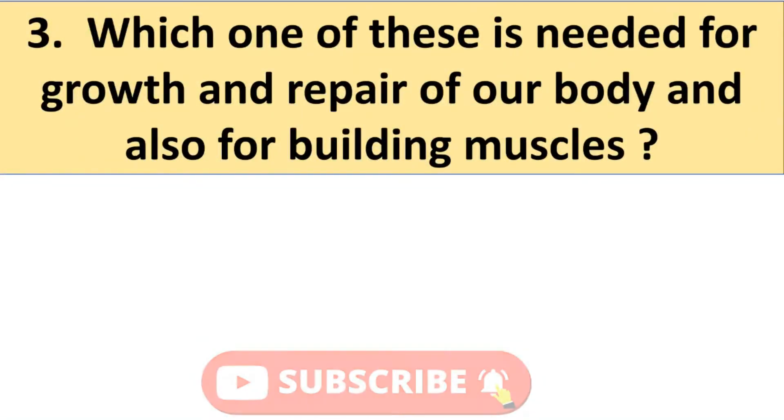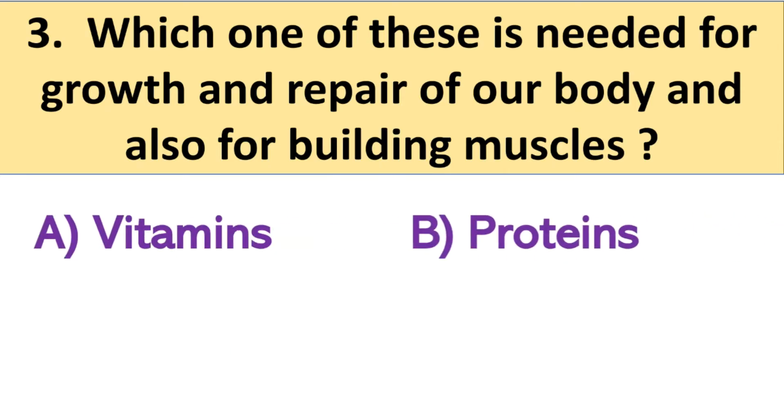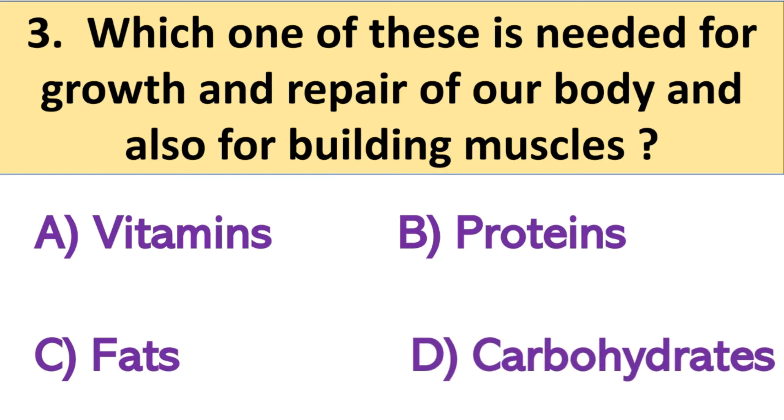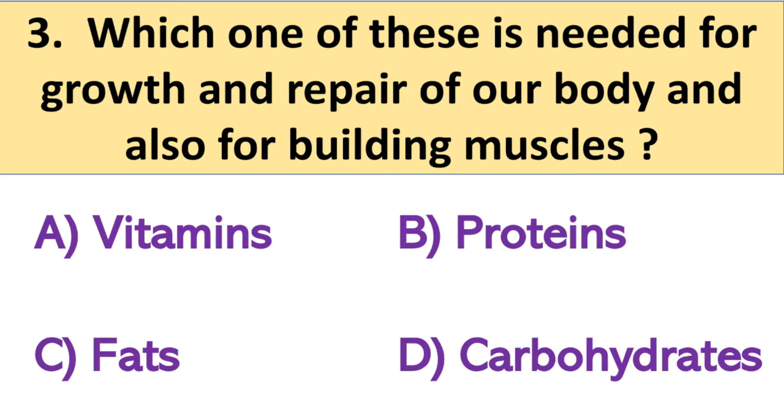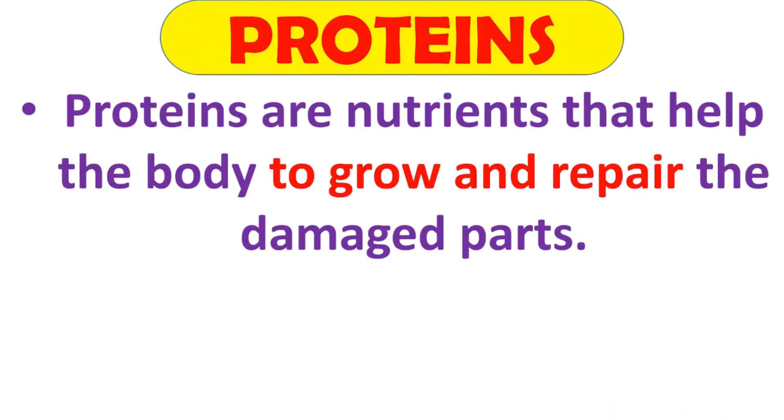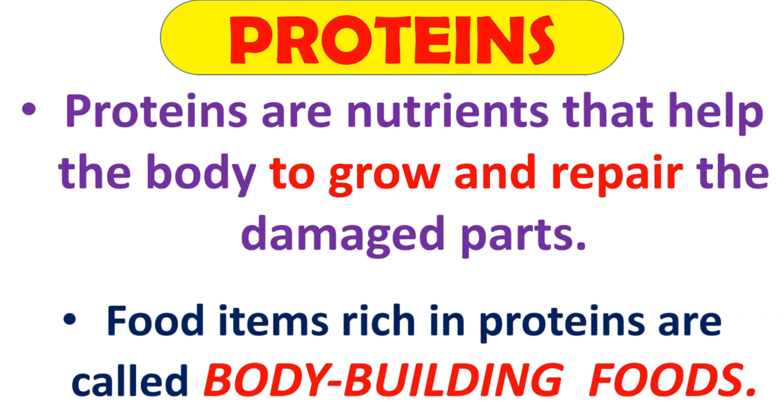Next question is, which one of these is needed for the growth and repair of our body and also for building muscles? Your options: A. Vitamins, B. Proteins, C. Fats and D. Carbohydrates. Think about the answer. And the right answer is B. Proteins. Proteins are nutrients that help the body to grow and repair the damaged parts. And because of these, food items that are rich in proteins are called body building foods.